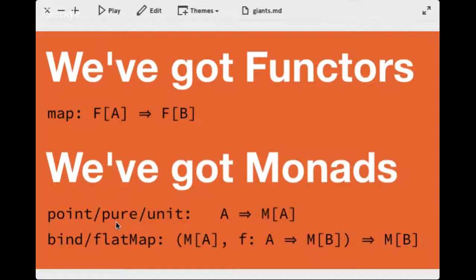Monads support a point and a bind operation. Point, pure, and unit all mean the same thing; bind and flatMap mean the same thing. A monad supports the ability to go from A to M of A — you take a type and lift it into a monad type. Think of Option: you take a value A and you have Option of A, which is Some(A). Even a sequence would also be a monad with a point operation.